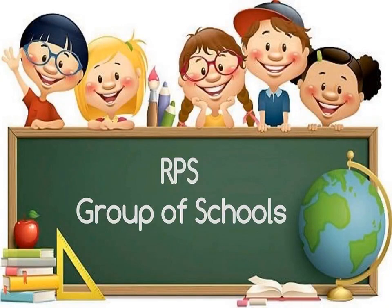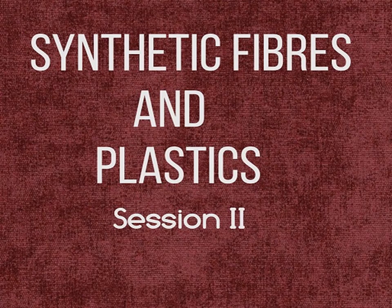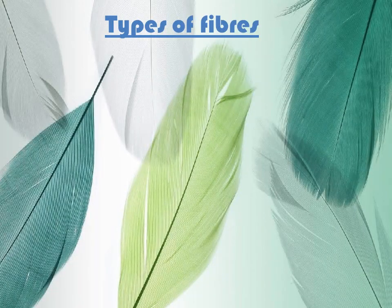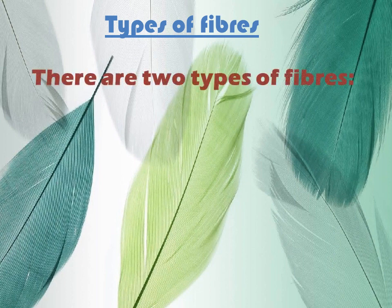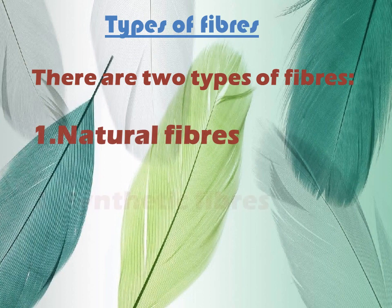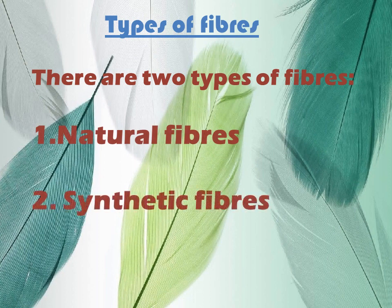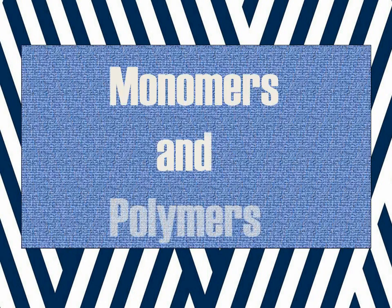Welcome to RPS group of schools online classes. Today we will continue with our chapter synthetic fibers and plastics. This is session 2. In the previous class we discussed the different types of fibers. Based on the origin or source, fibers can be classified as natural fibers and synthetic fibers. We also studied monomers and polymers in the previous session. Today we will continue discussing polymers in detail.